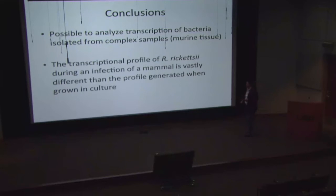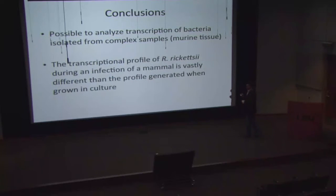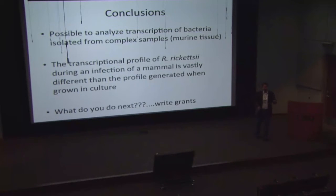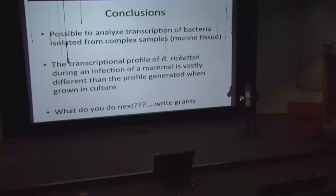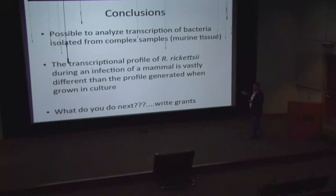The transcriptional profile obviously differs dramatically when Rickettsia rickettsii is in a host compared to being grown in culture. The big question is what you do with that. Well, you write grants and try to convince the NIH to fund these research projects because we feel they're important. Modification of LPS is a well-known virulence determinant in a variety of public health-important pathogens — Neisseria meningitidis, Yersinia pestis, Salmonella, Coxiella — but it has never been explored for any of the rickettsial diseases. There is also a specific secretion machinery called the Type 4 secretion machinery, which is very important in the pathogenesis of Helicobacter pylori, Anaplasma phagocytophilum, and Ehrlichia chaffiensis, but is not well understood for rickettsial species.